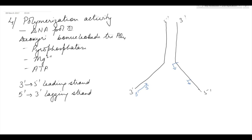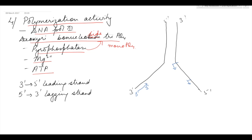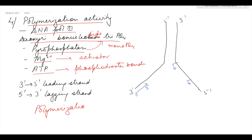After the formation of RNA primer, the main activity is polymerization, which takes place with the help of DNA polymerase 3, using deoxyribonucleoside triphosphates, pyrophosphates, magnesium ions, and ATP. Pyrophosphates convert triphosphates into monophosphate nucleotides; magnesium ions act as activators; and ATP is used to form phosphodiester bonds. Polymerization always occurs in the 5' to 3' direction.